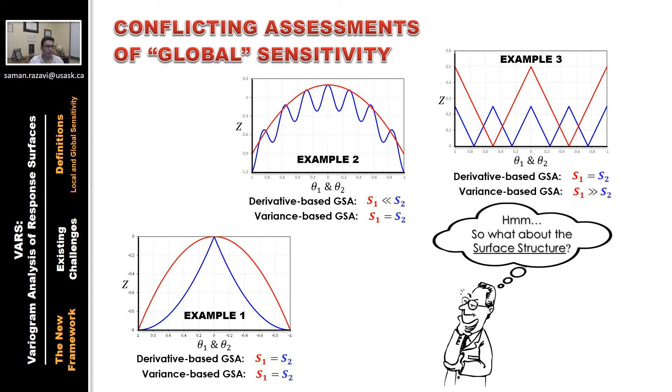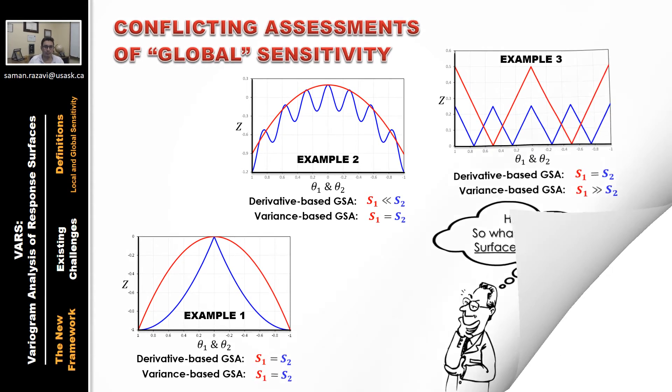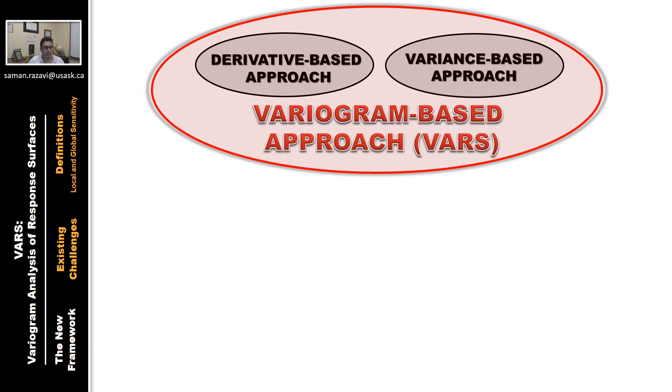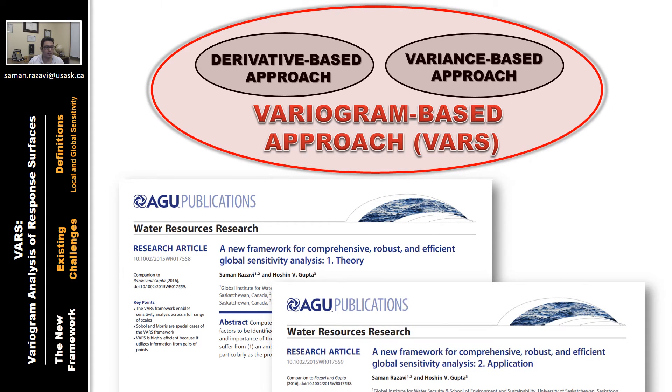In addition, what is being ignored really by these methods is the structure of the response surface. There is obviously some structural differences here and there, but they haven't been accounted for by these approaches. In addition, we have developed a new paradigm or approach using the variogram concept called VARS. This is actually a new framework that encompasses the existing approaches under the same umbrella, and as a special case, it reduces to derivative and variance-based approaches.